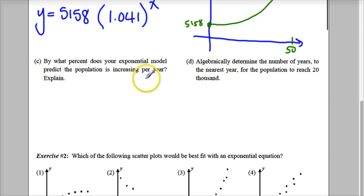Now it says, by what percent does the exponential model predict the population? So remember when we talked about exponential function, and it's always going to be 1 plus whatever percentage? So looking at this, this model predicts that the population is going to be increased by 4.1% per year.